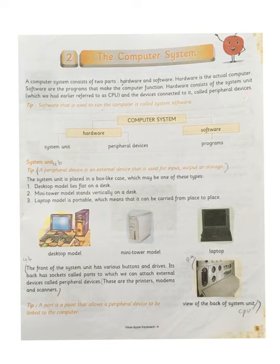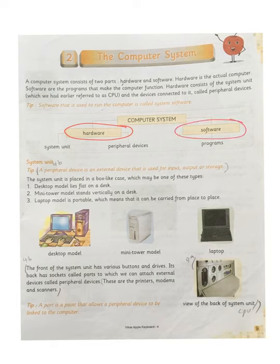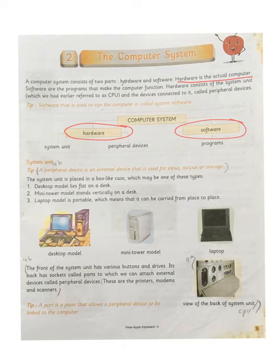The computer system is made up of two parts: hardware and software. Hardware is the actual computer — the computer we can physically touch with our hands and see with our eyes. Software are the programs that run inside the computer. For example, in a mobile phone, the physical phone in your hand is the hardware, and the video you are watching on YouTube, or any app or game you are using, is the software.